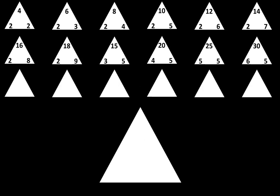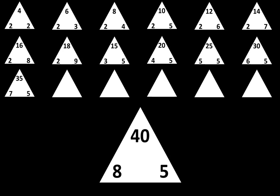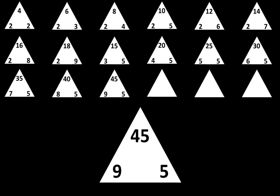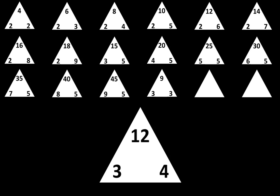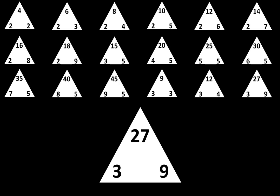Let's move to the next row. The next one is 7 times 5 is equal to 35. The next one is 8 times 5 is equal to 40. The next one is 9 times 5 is equal to 45. The next one is 3 times 3 is equal to 9. The next one is 3 times 4 is equal to 12. The next one is 3 times 9 is equal to 27.